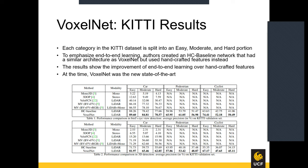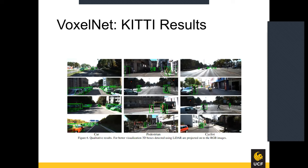Overall, VoxelNet performs well on the KITTI dataset, which is split into easy, moderate, and hard categories. To emphasize the importance of end-to-end learning, the authors also report results of an HC baseline — a similar architecture using handcrafted features instead of VFE layers. At the time, VoxelNet became the new state-of-the-art in 3D object detection, outperforming all previous work across detection tasks and categories. Qualitative results show the network successfully detecting cars, pedestrians, and cyclists in their respective images.